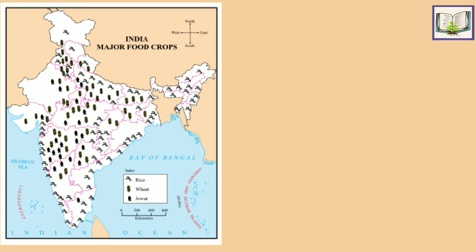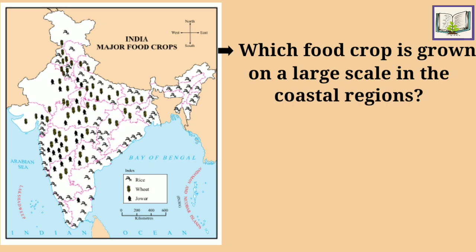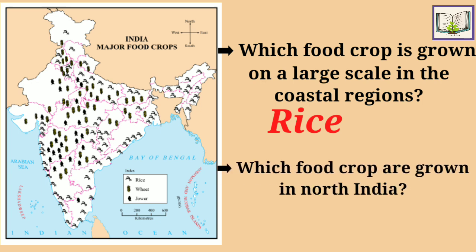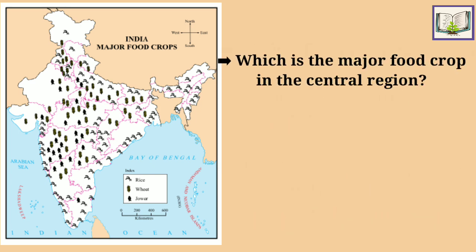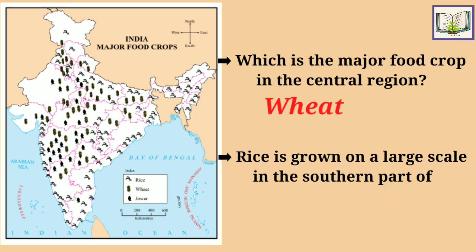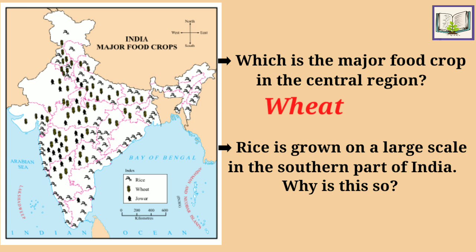As we know, there are four directions — North, South, East, and West. According to the direction, the grains have been distributed. Which food crop is grown on a large scale in the coastal region? That is rice. Which food crops are grown in North India? Wheat and jawar. Which is the major food crop in the central region? That is wheat. Rice is grown on a large scale in the southern part of India.